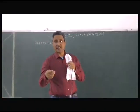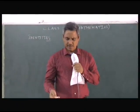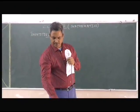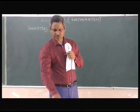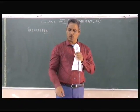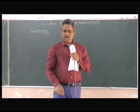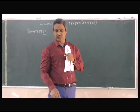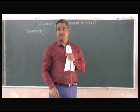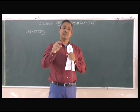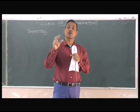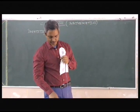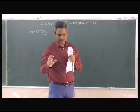Your Innovative Maths book gives a very nice definition of why it is called an identity. An equality which is true for all values of variables is called an identity. So it is an equation which is true for all values of variables — that is why we call it an identity.